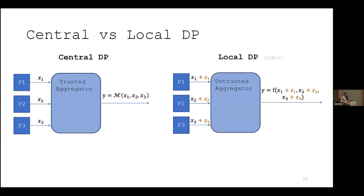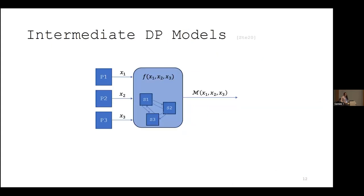However, if we don't have a trusted aggregator, the local model gives us a nice alternative where now individuals add noise locally to their values before forwarding that on to an untrusted aggregator to compute the function. Both of these have advantages and disadvantages, while the central model relies on this assumption of a trusted aggregator, it allows this aggregator to add the right amount of noise that's necessary for differential privacy, giving a good privacy utility trade off. And in local differential privacy while we don't rely on the assumption of a trusted aggregator, this means that individuals need to add much more noise locally, which might degrade utility in some cases. This motivates the need for intermediate models of differential privacy, like this one here, which is the multicentral model.